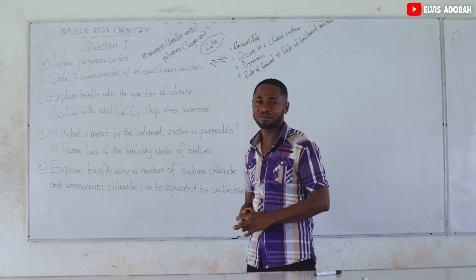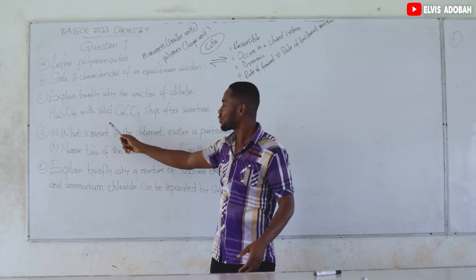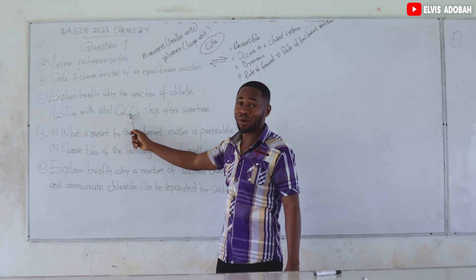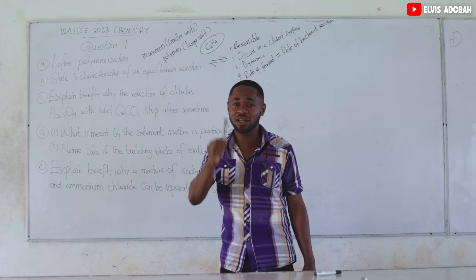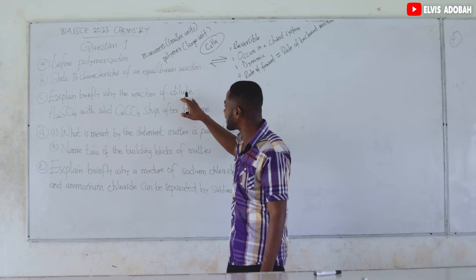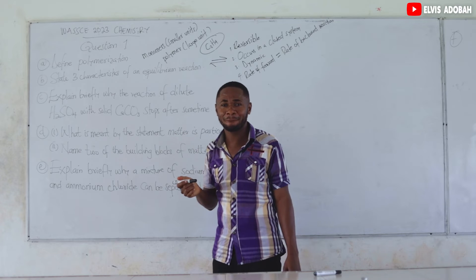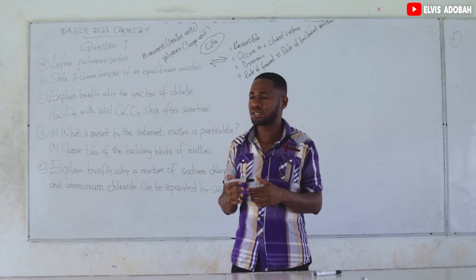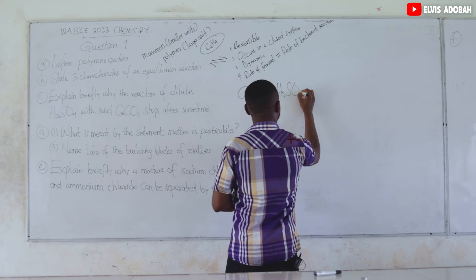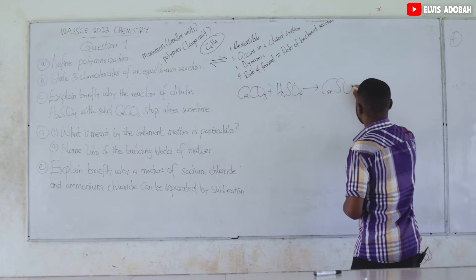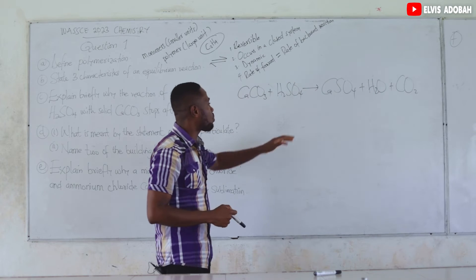Remember, H₂SO₄ is an acid and CaCO₃ is a carbonate base. When this acid reacts with this base, we form a salt, water, and produce carbon dioxide gas. As calcium carbonate reacts with sulfuric acid, we form calcium sulfate, water, and carbon dioxide — these are the products of the reaction.